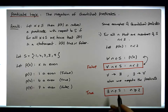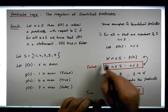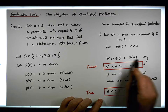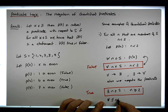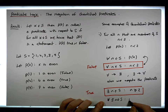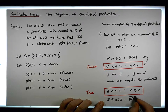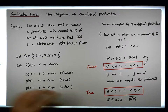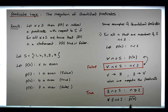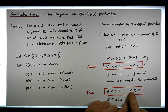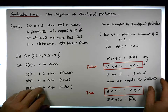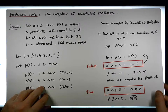We could rewrite this in similar notation: there exists an n that's an element of s, such that we have P of n bar — the negation of P of n. That's another way to write that. P of n bar is just the statement that n is greater than or equal to 2.